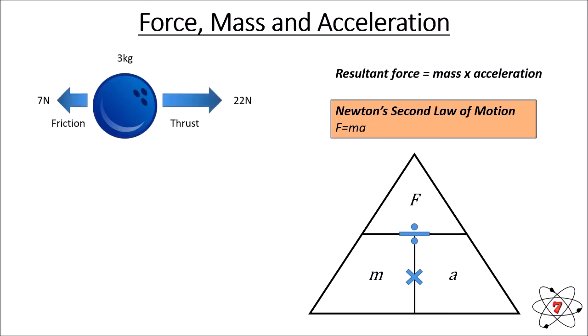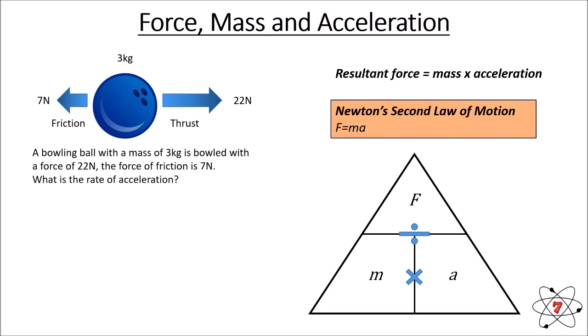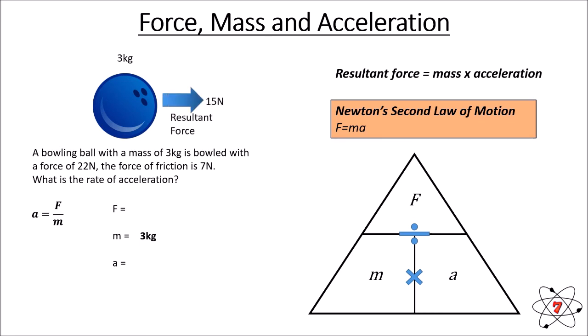Let's look at a slightly more complex example. We have a bowling ball with a mass of 3 kilograms. There are two forces involved: a forward thrust of 22 newtons and friction slowing it down at 7 newtons. What is the rate of acceleration? Acceleration equals force over mass. The resultant force is 22 minus 7, which equals 15 newtons. Dividing 15 newtons by 3 kilograms gives us 5 meters per second squared.